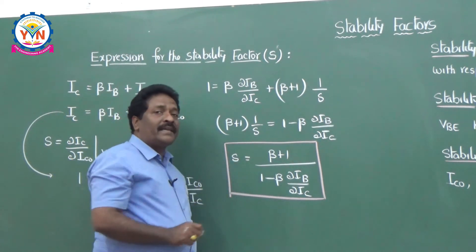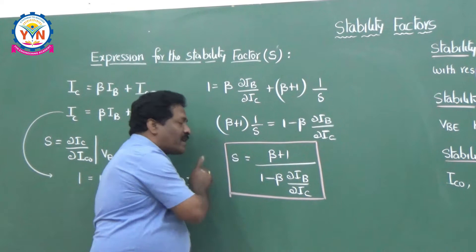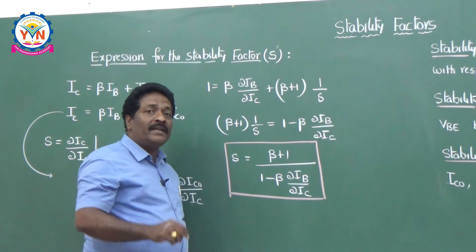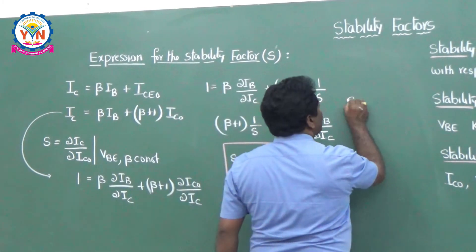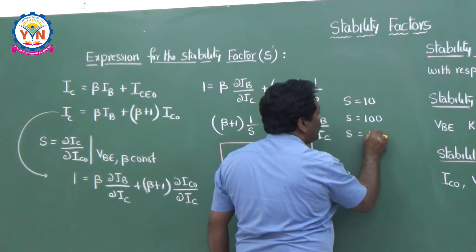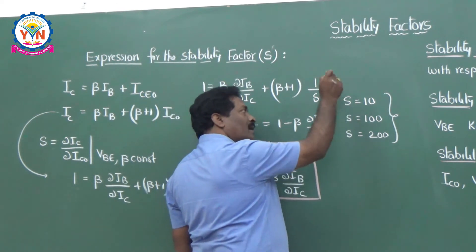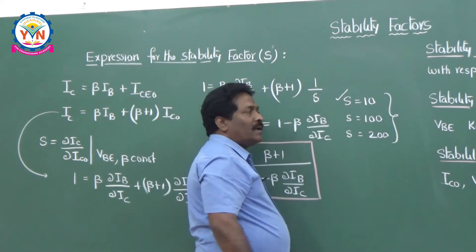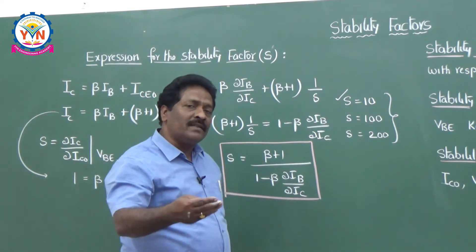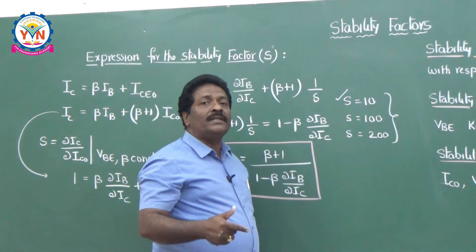Stability factor S indicates how stable the circuit is. A higher value of S means less stable, and a lower value of S means more stable. For example, if S = 10, S = 100, and S = 200, the best circuit is the one with the least value of S — the least value is preferable. If S is less, the circuit is more stable; if S is more, the circuit is very much less stable. Depending on the value of S, you can decide which is the best biasing circuit.